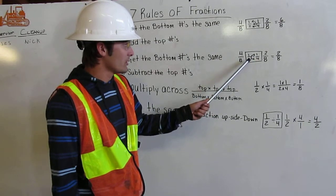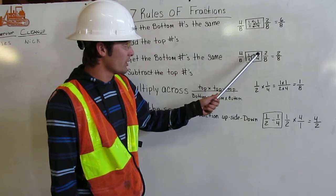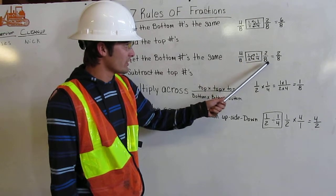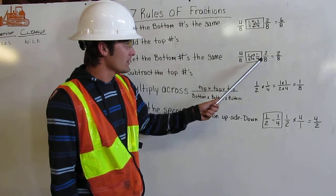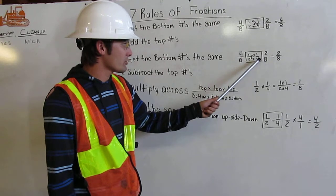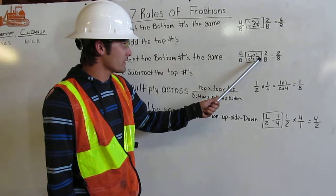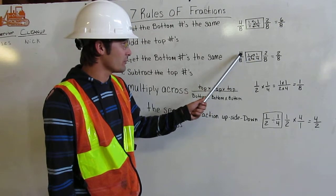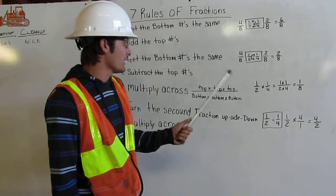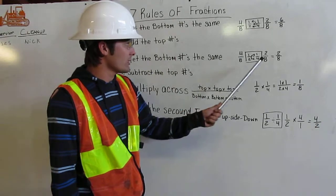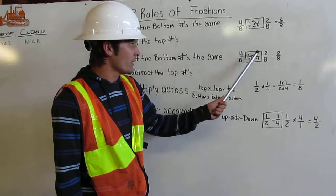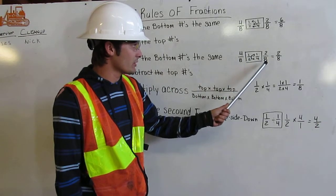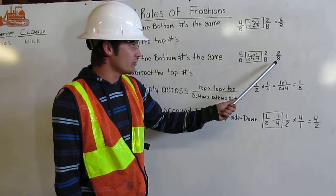Then I'm going to multiply 2 times 1, and that's going to give me 2. I'm going to multiply 2 times 4, and that's going to give me 8. Over here I'm going to cross and go back the other way. 4 times 2 gives me 8, and 4 times 1 gives me 4. Now I'm going to subtract across. 4 minus 2 equals 2, and I'm going to keep my bottom numbers the same. That gives me 2 over 8.